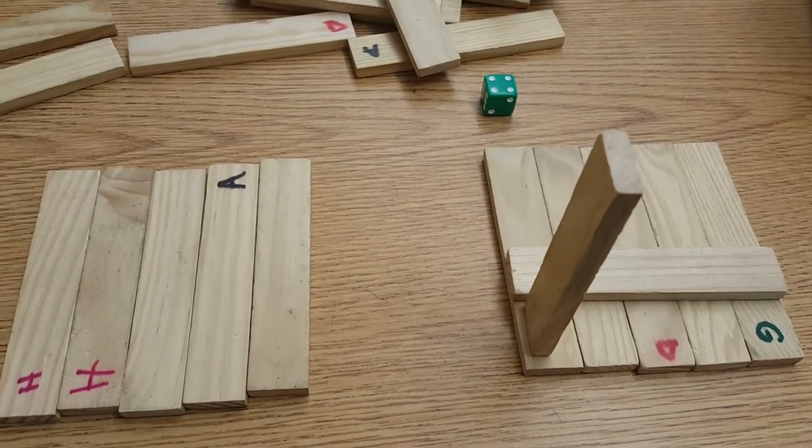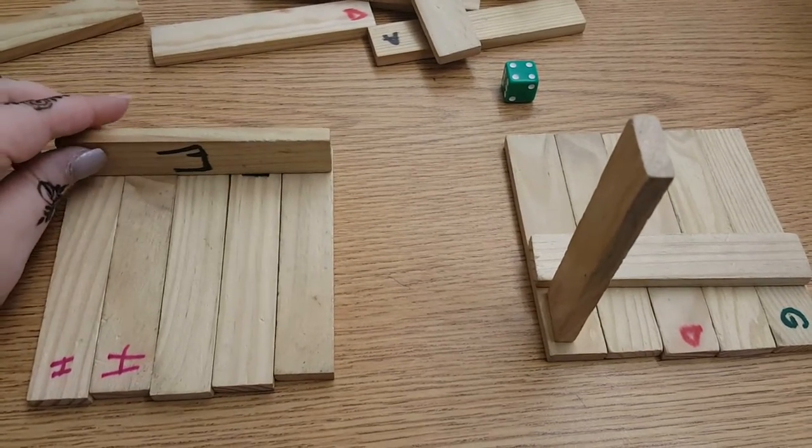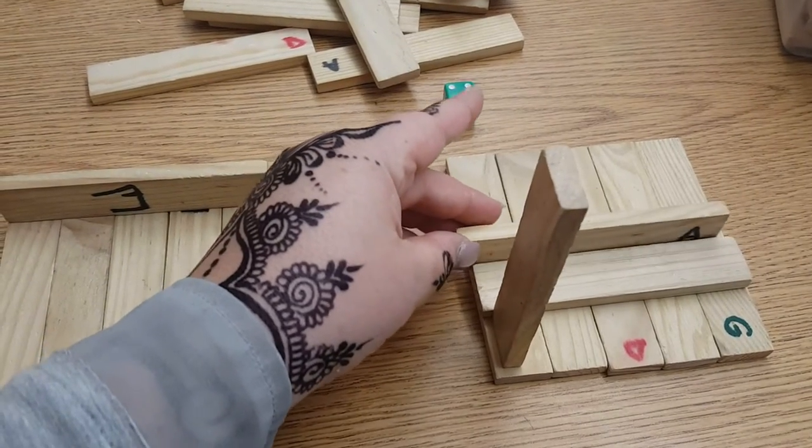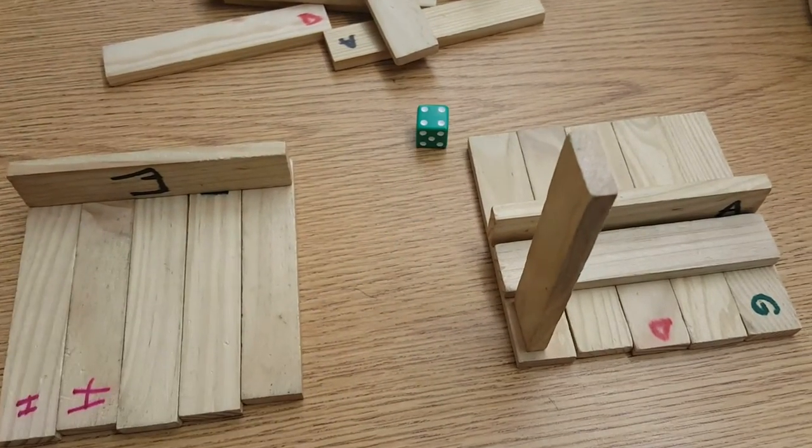All right. Four. Four is a side piece, so both players must place a side piece onto their board. Player two is still the roller.